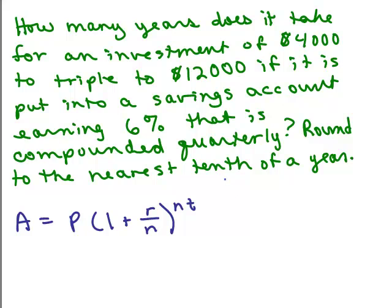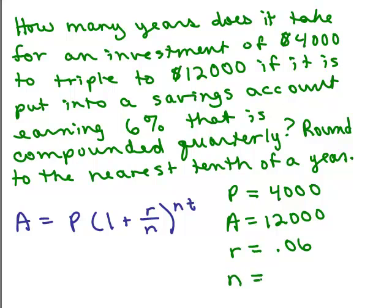Let's see what we know. P is the original investment, and that was $4,000, and we want it to end up at $12,000. We don't know what t is, but r is our interest rate, and that's 6%, so we could write 0.06 or 6 hundredths. If you want to write it as a fraction, that's fine too. And n is how many times it's invested per year. So that's how we start the problem.